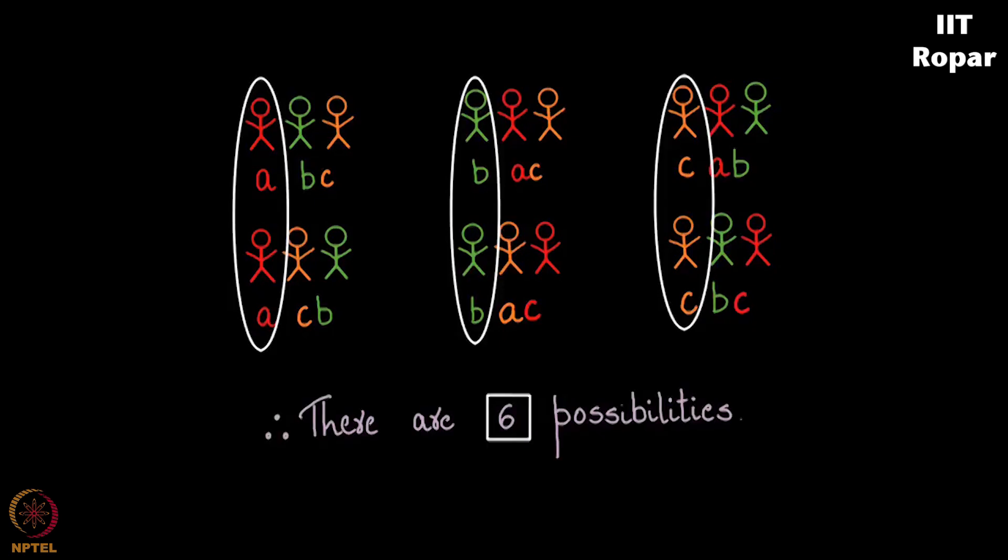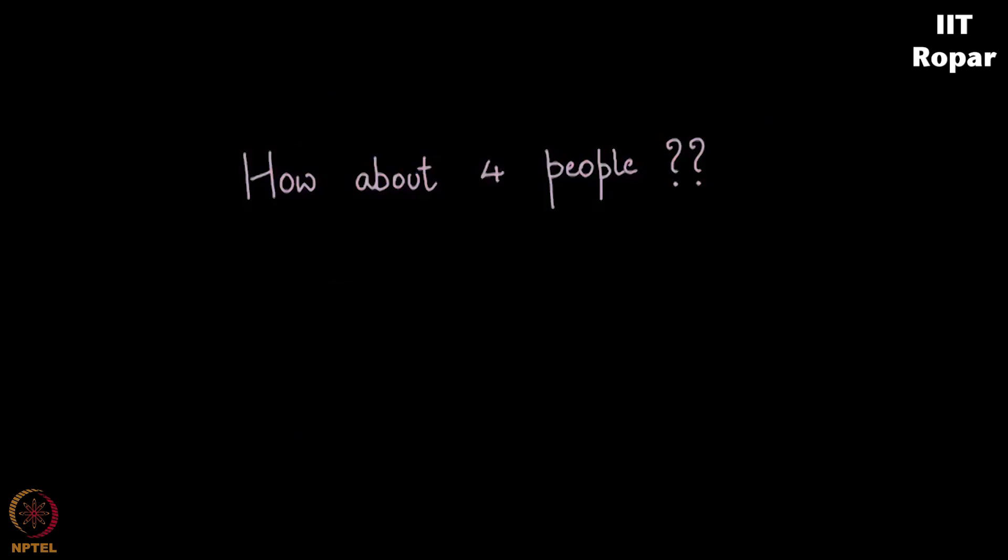So there are six possibilities as you can see. Perfect. Now how about doing this for four things A, B, C, and D, let us see.